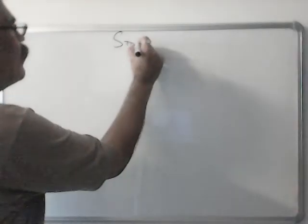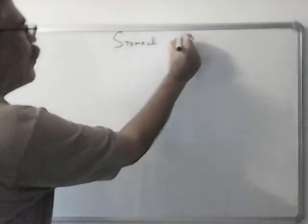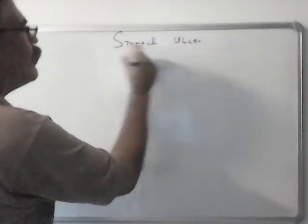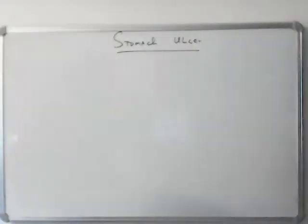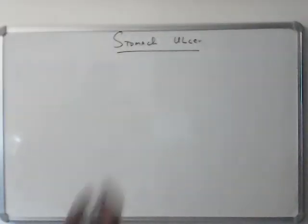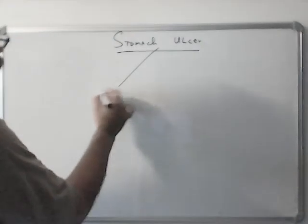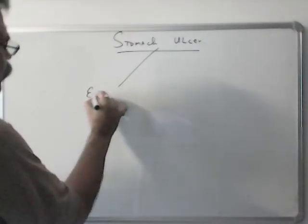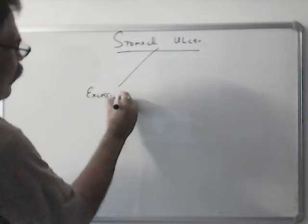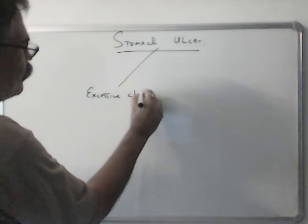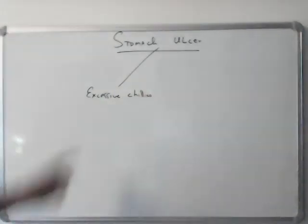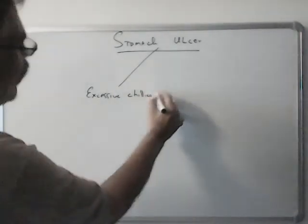Today we will do Stomach Ulcer. Causes of Stomach Ulcer. One is Excessive Chilli, consumption of Excessive Chilli, especially Red Chilli Powder.